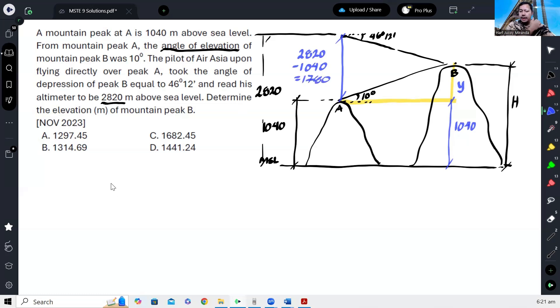And then we can measure this angle. How do we measure that? Using the principle of opposite angles. When you draw a horizontal line here, this is 10 degrees by opposite angles. And this is 46 degrees, 12 minutes. So if we add them, the angle is 56 degrees, 12 minutes.